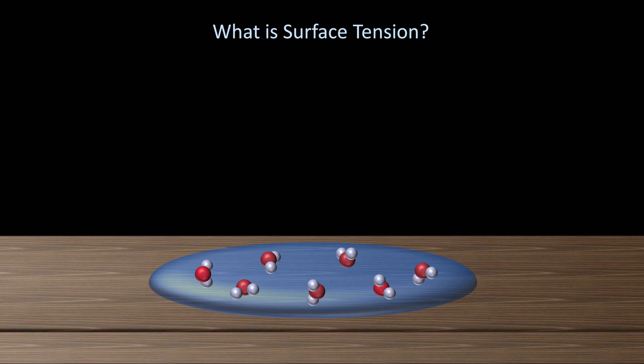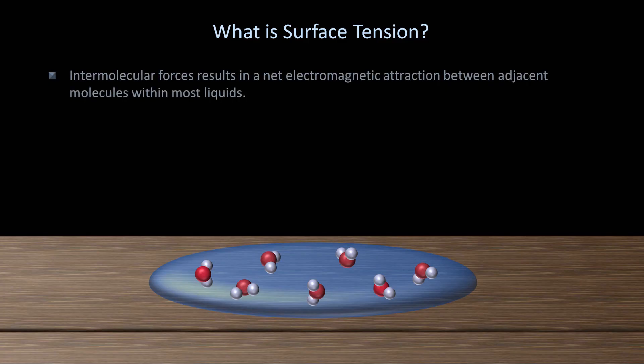Of course this doesn't happen, but why doesn't it? It's the consequence of the intermolecular forces that were first mentioned in Lesson 10 on viscosity. Although some of these forces are sometimes pulling and sometimes pushing molecules around, overall there is a net electromagnetic attraction occurring between adjacent molecules in most liquids. This attraction pulls the liquid together until an equilibrium is reached with other forces — in this case, gravity.